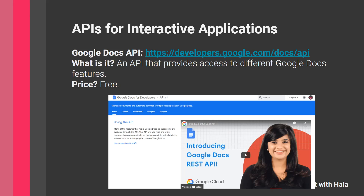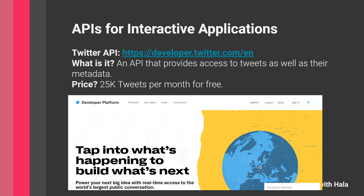The next interactive API is the Google Docs API, which gives you access to Google Docs features — word processing, writing documents, editing documents, and related tasks. This one from Google is completely free to use. A big advantage of using APIs from major companies like Google is that there is plenty of documentation, YouTube videos, and tutorials available, so if you don't know where to start, going to a Google API is a good idea.